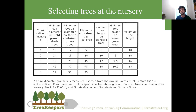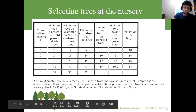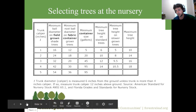I'd always advise against planting a really huge tree unless you can afford to have it babied for the first seven years. For most of us, a mid-sized tree with a nice root ball will have less transplant shock and actually catch up to larger trees. Research has shown that a one-inch caliper tree will catch up to a three-inch tree in roughly five to seven years depending on species. Patience is key to successful tree planting.